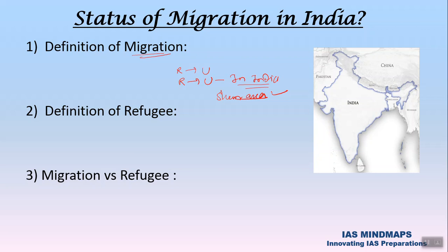Migration is basically moving from one place to another. It can be temporary or permanent. There is another concept that we often confuse with migration — that is refugees.